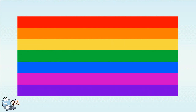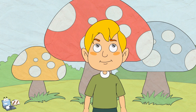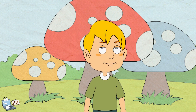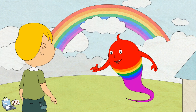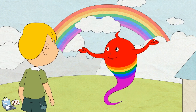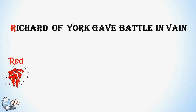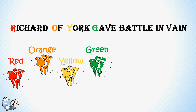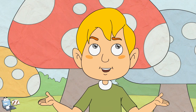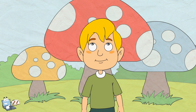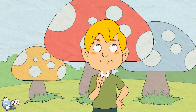Oh, it's so interesting! But there are so many colors in the rainbow, I'll forget the names. Let me simplify this for you — just remember this mnemonic: Richard Of York Gave Battle In Vain — red, orange, yellow, green, blue, indigo, and violet. Thank you for making this easy for me. You are welcome, Tim.